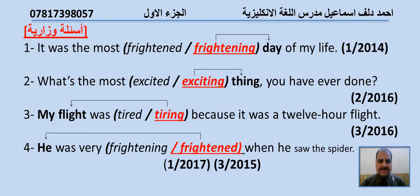Number four: He was very frightening/frightened when he saw the spider — first attempt 2017 and third attempt 2015. We choose frightened, past participle, because it describes a person — we have 'he' here. صارت الجملة: He was very frightened when he saw the spider.